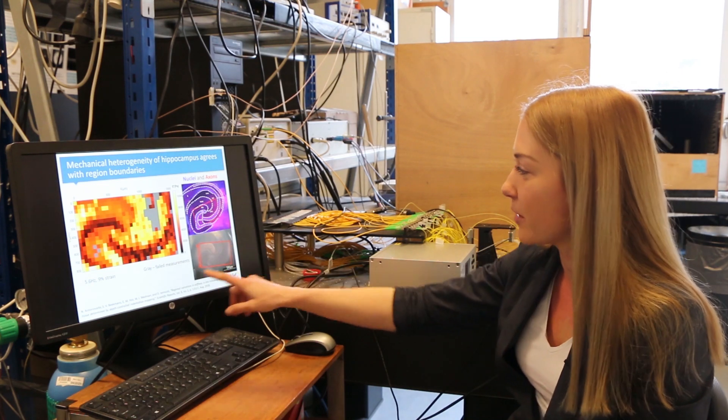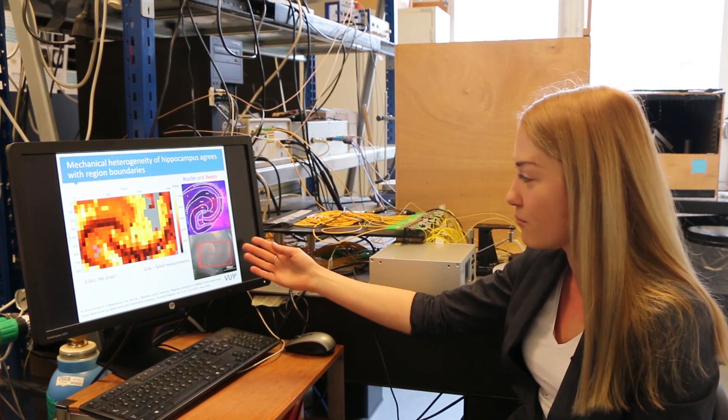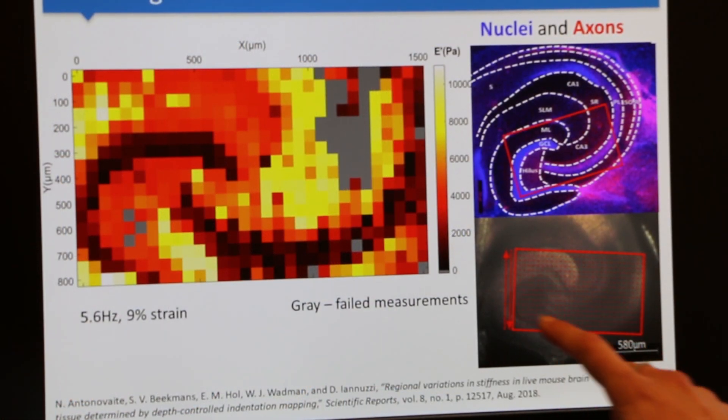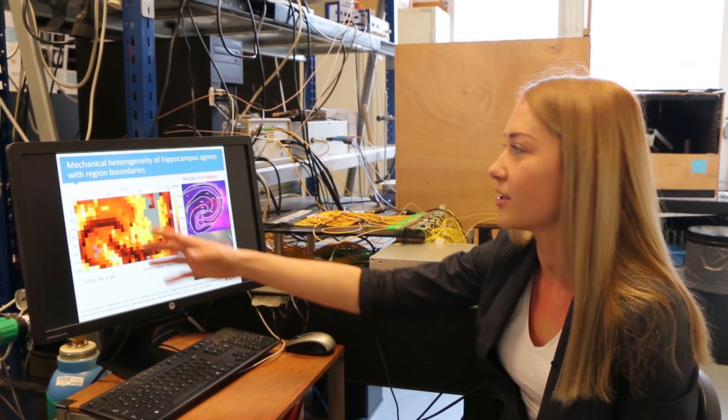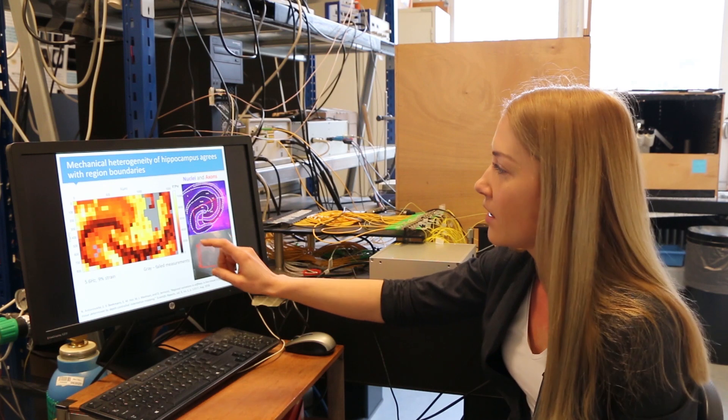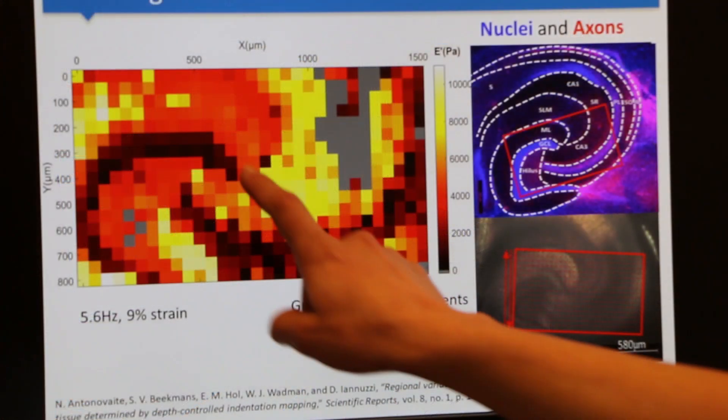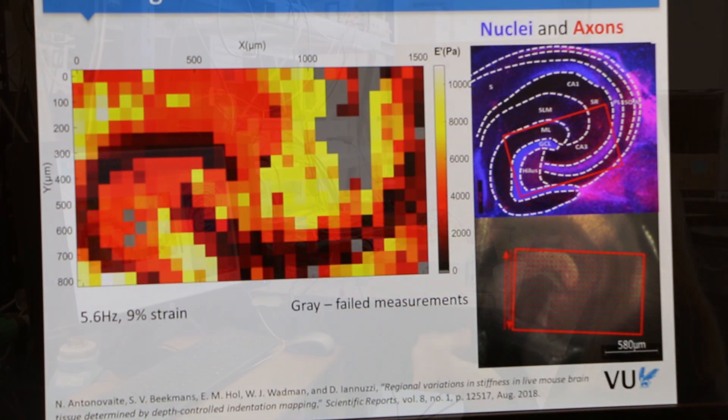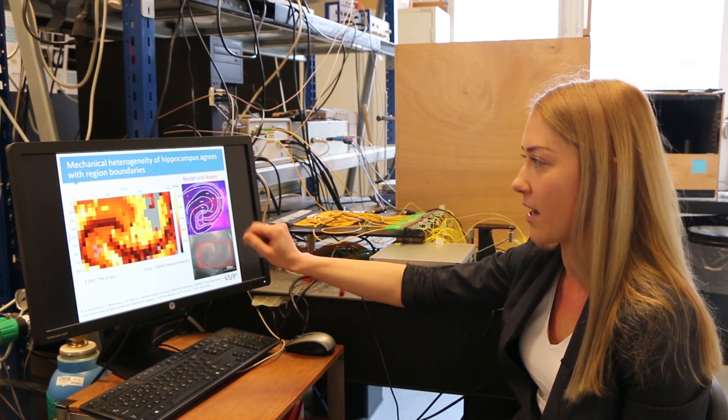In this picture you see the inverted microscope image of hippocampus. The red dots indicating different indentation locations that we do by scanning. And here is the storage modulus map. So you see that the regions with dark color are really soft and the regions with bright yellow color, they are much stiffer. And that correlates to the actual structure of the brain.